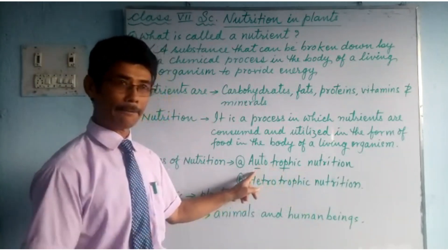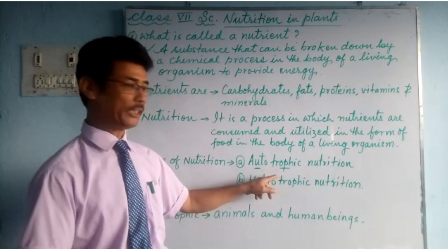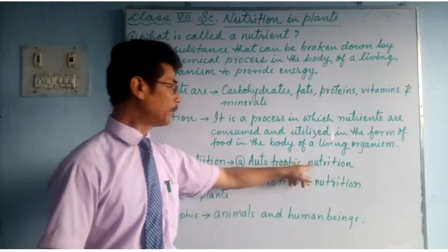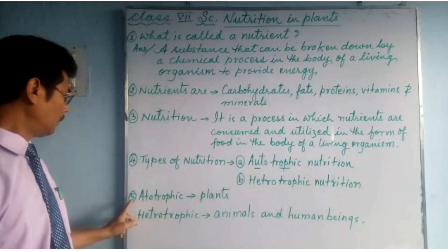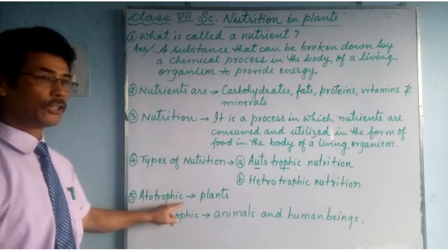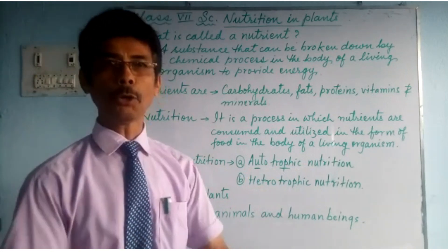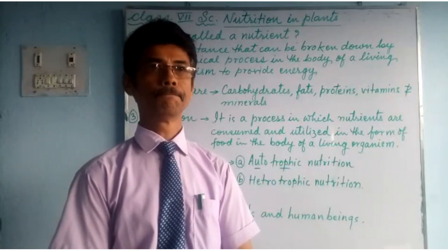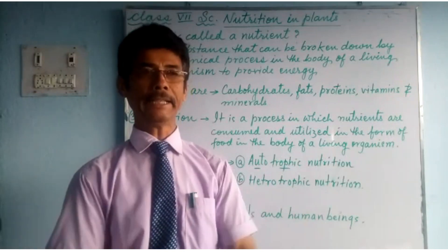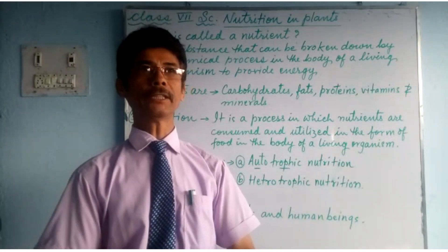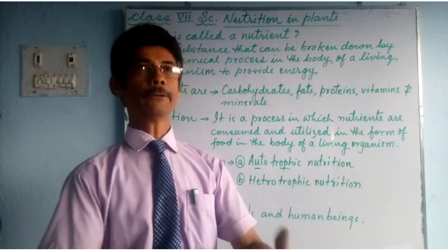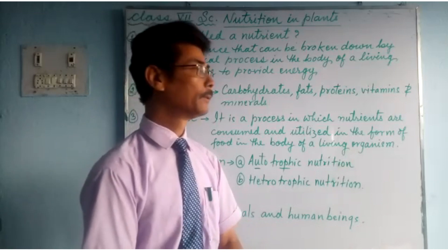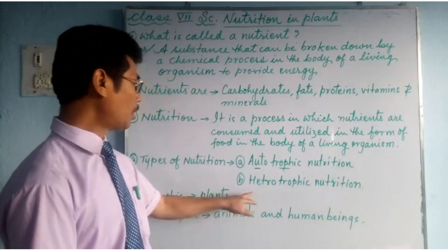Auto means self, tropic means producing, and hetero means depending. Number 5: autotrophic — such as plants. They prepare their own food; they do not have to go around searching for food. Nature has given us a great blessing that we have plants on our earth — they produce food. They are autotrophic.